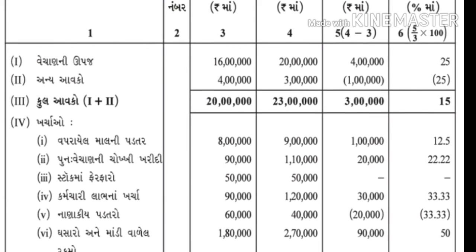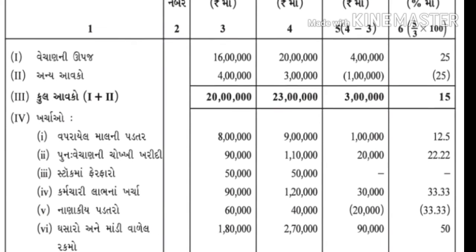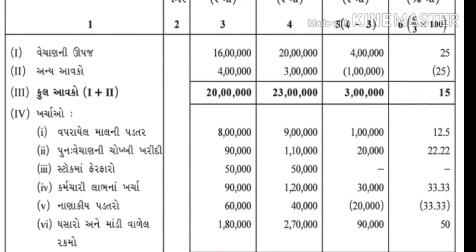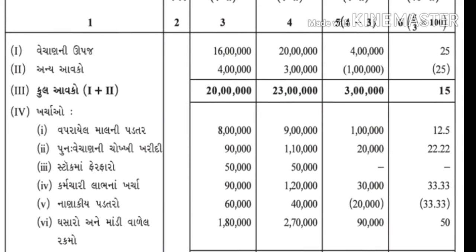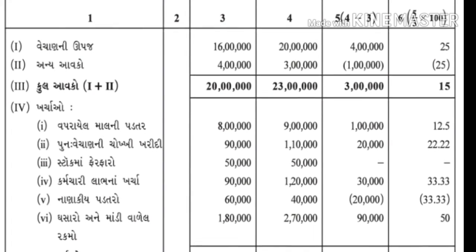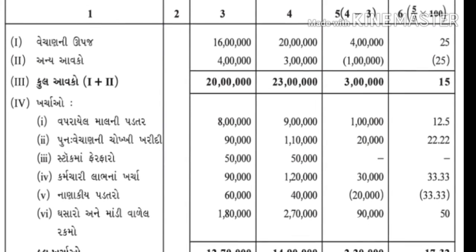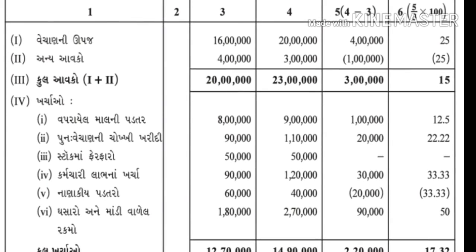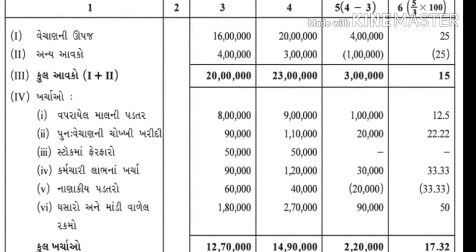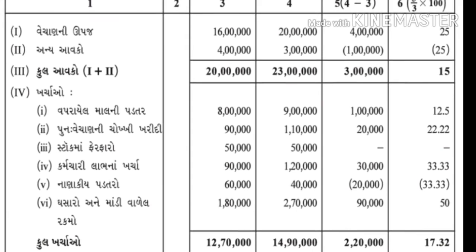ત્યારબાદ ખર્ચ - 2017માં 9 લાખ, 2016માં 8 લાખ - 1 લાખ વધારો - 12.5% - ત્યારબાદ ફરી વેચાણ ખરીદી - ત્યારે - ડૅશ (−) - બંને ખાલી. ત્યારબાદ કર્મચારી ખર્ચ - 2017 - 1 લાખ - 2016 - 90 હજાર.